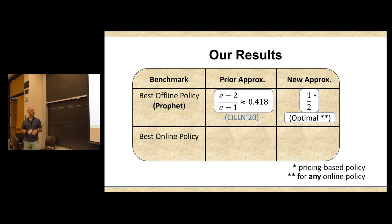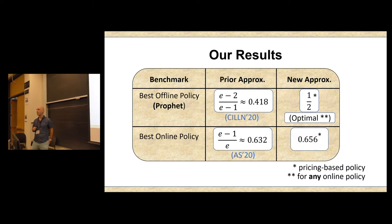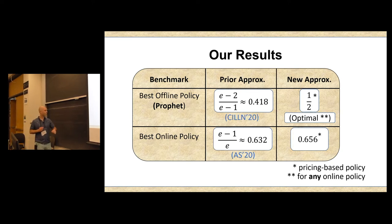Switching things up. Now we want to compete with the best online policy, which is weaker than the best offline, but somehow is a more apples-to-apples comparison. So the best bound known here is a one-minus-one-over-e approximation due to Awad and Saritac from EC two years ago. And what we show in this work is that you can get the same bound and, in fact, a little bit better, a 0.65, again using a pricing-based policy.